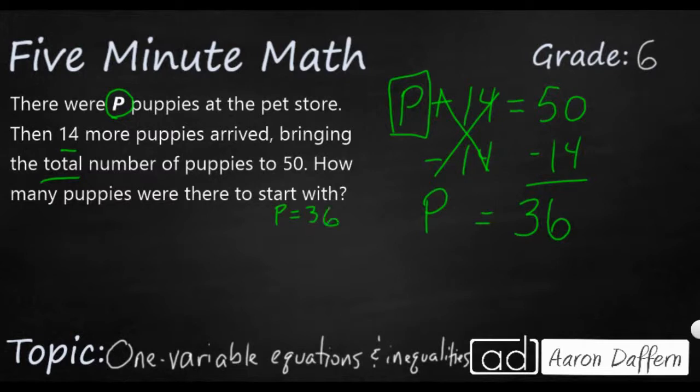The easiest way to check it out is just to plug it back into my equation to make sure it works. 36, which is what the P is. Add that to 14. Does that make 50? Yes, it does. Let's look at another example.